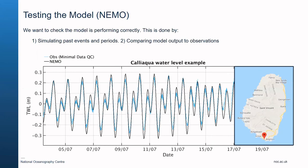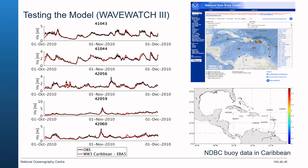Once a model has been set up it's very important to check it against observations. Tide gauge data has been used in St Vincent to ensure that water levels look sensible by comparing model simulation with observations over a certain period of time. The same has been done for the wave model using wave buoys available through the Caribbean region, comparing wave heights with observations over a set period of time.